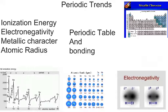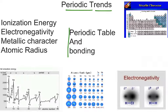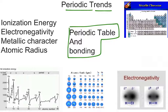Hi, this is Mr. Adams from Midwood High School, and this is a video presentation on periodic trends. We're having a test on Wednesday on the topics of periodic table and bonding, so I hope this video will be a help. The trends we'll be looking at will be ionization energy, electronegativity, metallic character, and atomic radius.